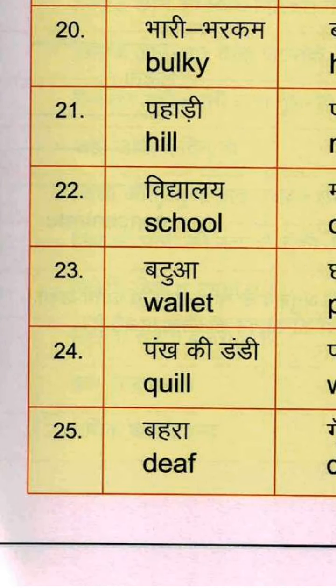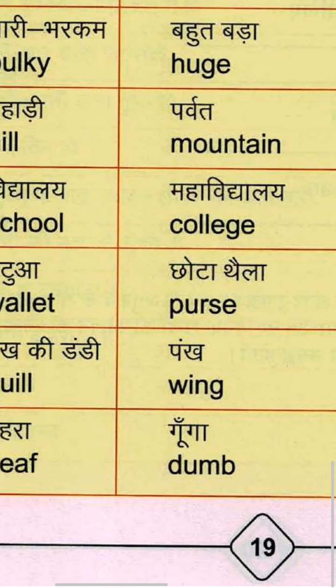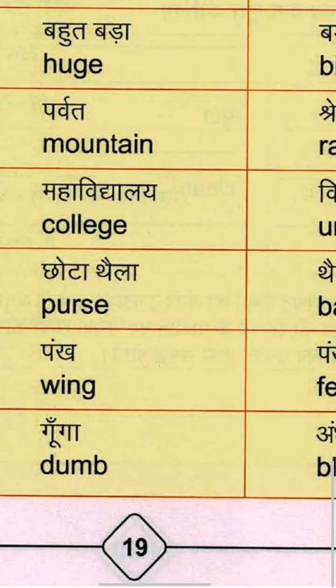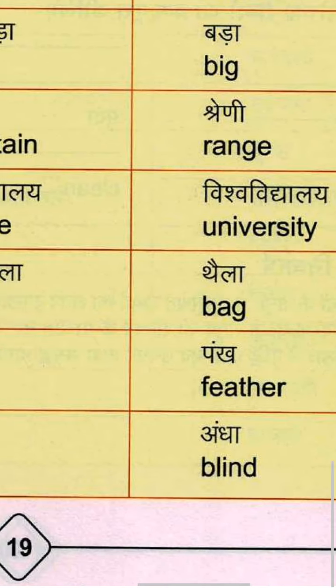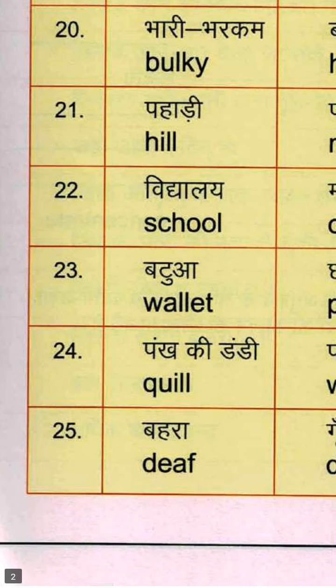Twenty-first group: Pahadi means Hill — H-I-L-L. Parvat means Mountain — M-O-U-N-T-A-I-N. And Shreni means Range — R-A-N-G-E.